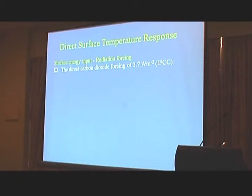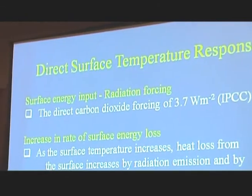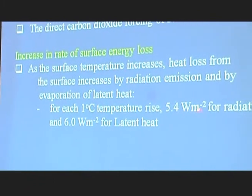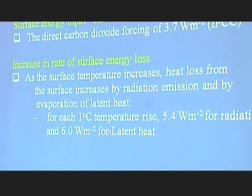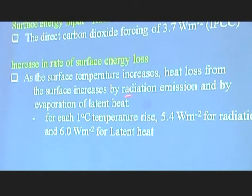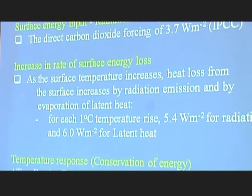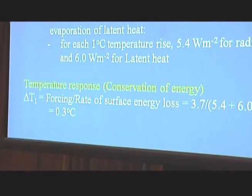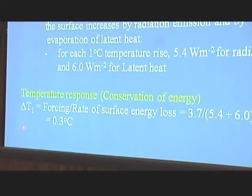We can also calculate this. The surface energy input — the radiation forcing — is about 3.7 watts per square metre. The increase in the rate of surface energy loss is from two components: for each one degree temperature rise, 5.4 watts per square metre for radiation and 6 watts per square metre for latent heat, at the Earth's average temperature of 15 degrees. So we need quite a bit of energy input to the Earth's surface to actually raise the temperature. Because the energy input is only 3.7 watts per square metre and the loss rate is 11.4, the new equilibrium temperature is only about 0.3 degrees. This is conservation of energy — if you're going to raise the temperature by more than 0.3 degrees, you've got to find another energy source.